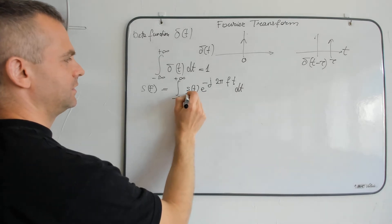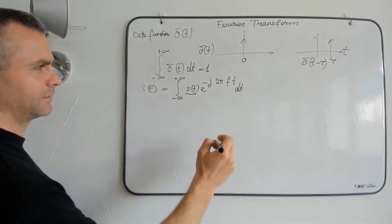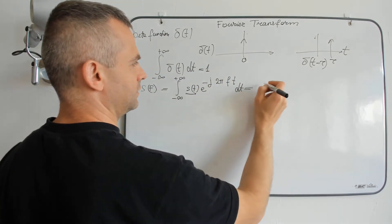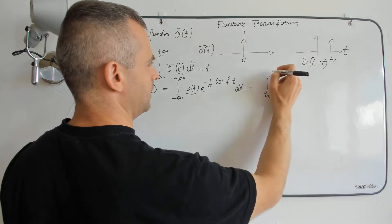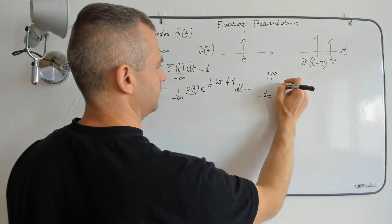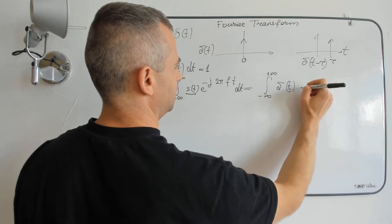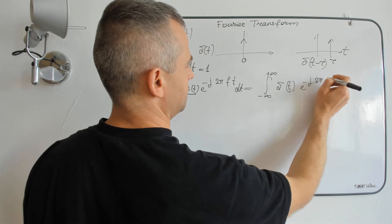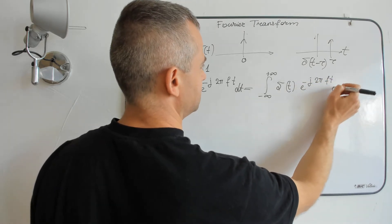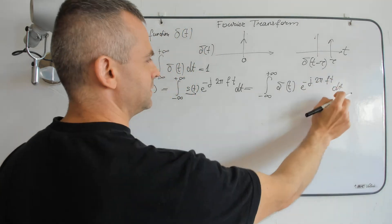S of t is my delta function. So I'll get here no delayed delta function, S of t exponential minus j 2 pi f t dt. But how to calculate this integral?